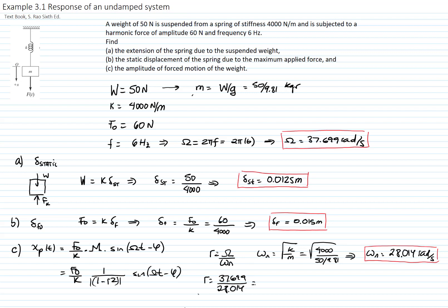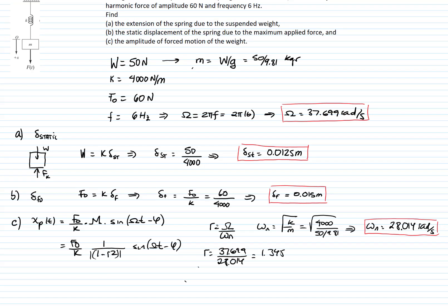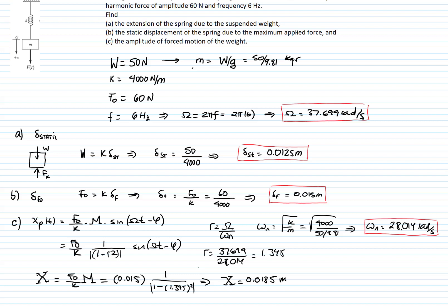R is greater than 1, which already gives us a lot of information — for example, that the phase angle is 180 degrees. So the amplitude will be equal to the static deflection times the amplification factor: that's 0.015 times 1 over (1 minus 1.345 squared). I take the absolute value because above R equals 1 the response is always negative, and it has a phase angle greater than 90 degrees — in the case of no damping, we know that it's 180 degrees.